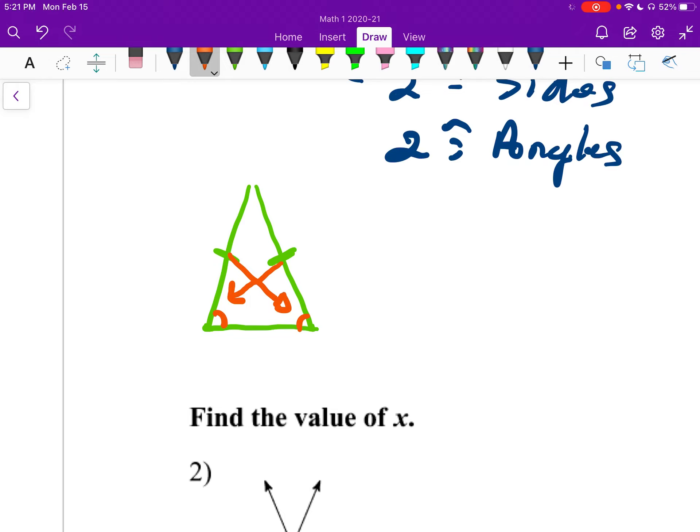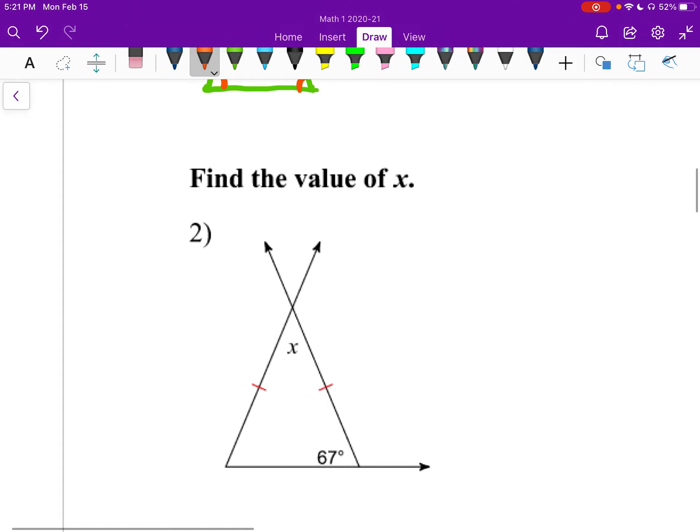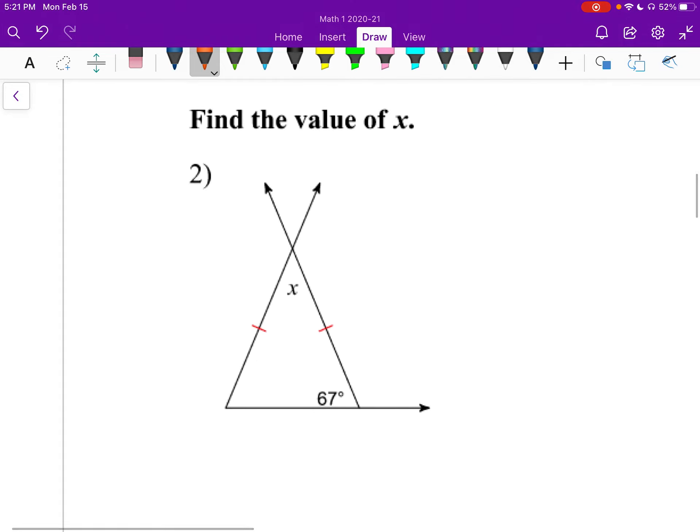Some people call them the base angles of an isosceles triangle. So based off that picture, we know that this and this are congruent, right? Those base angles, those angles that are opposite the equal sides or the congruent sides.